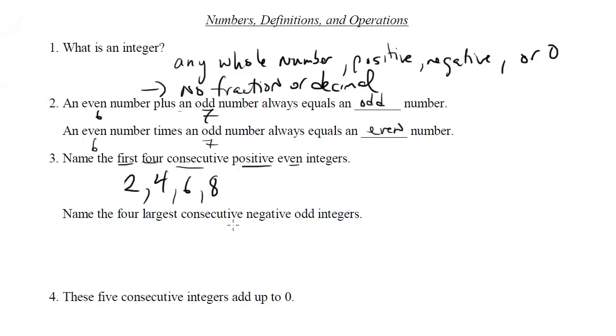So in fact, the largest negative odd integer would be negative 1. And then you would have negative 3, and then negative 5, and then negative 7. So these are odd, they're negative, and they're the largest negative odd integers you can get.